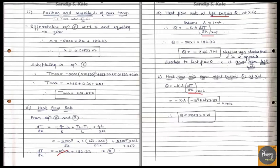For the heat flow at the right face (x = L = 0.12 m): Q = −k·A·(dT/dx)|_{x=L}. Substituting x = 0.12 m into equation 8 gives the value of dT/dx, and we get the heat flow rate from the right surface.